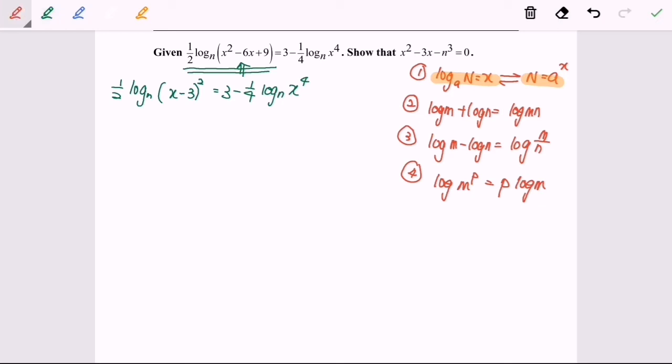Next I'm going to use rule number 4. I'm going to bring the power down. So log base n x minus 3 to the power of 2 becomes 1 over 2 log base n x minus 3 equals 3 minus log base n x to the power of 4 times 1 over 4. I'm applying rule number 4.